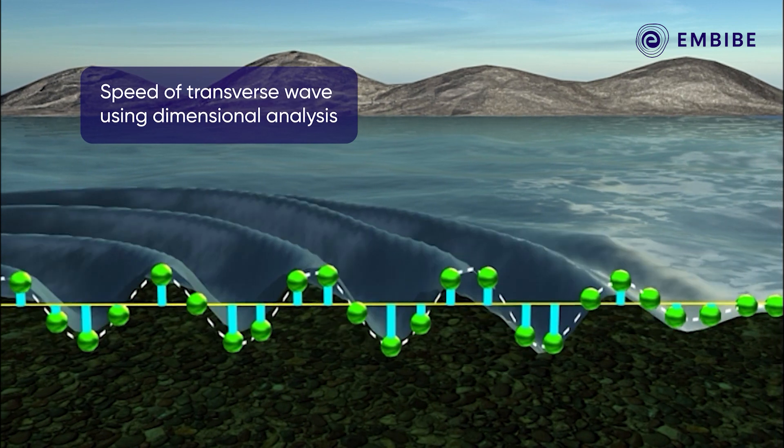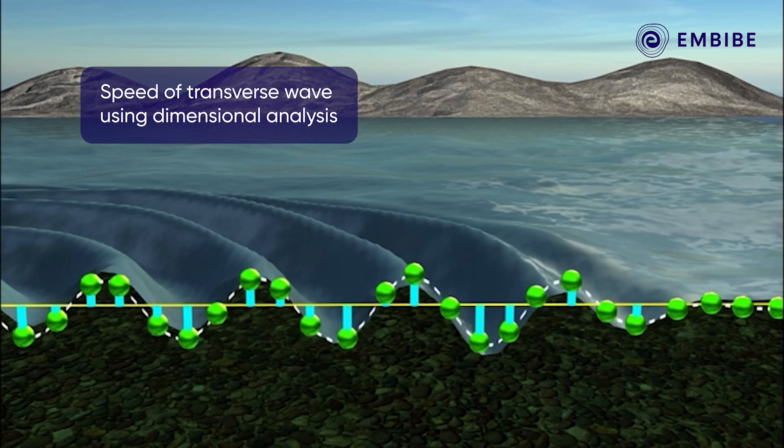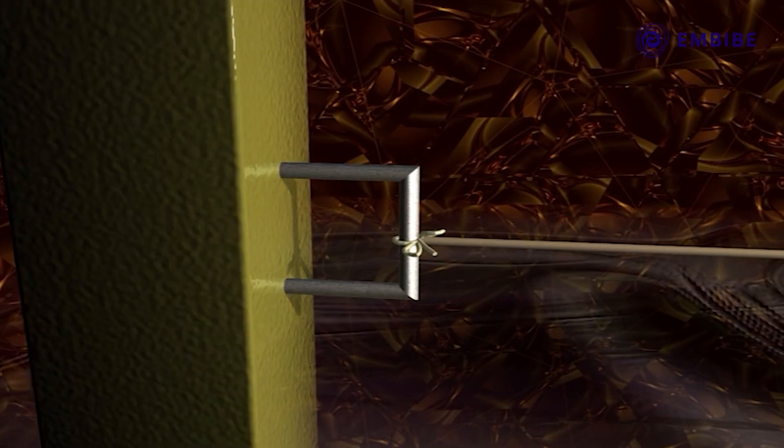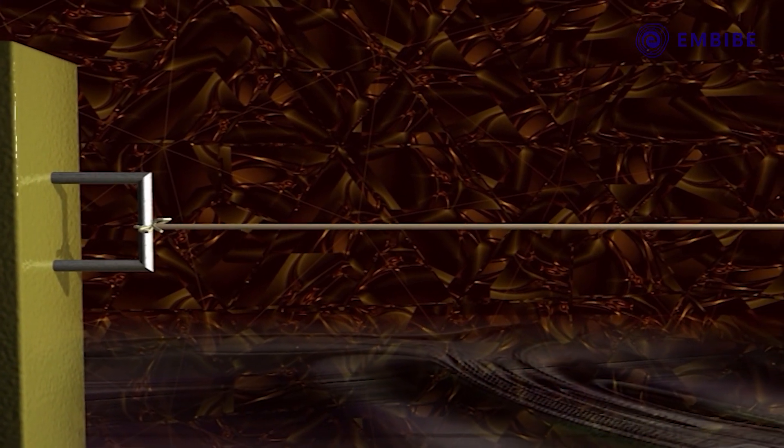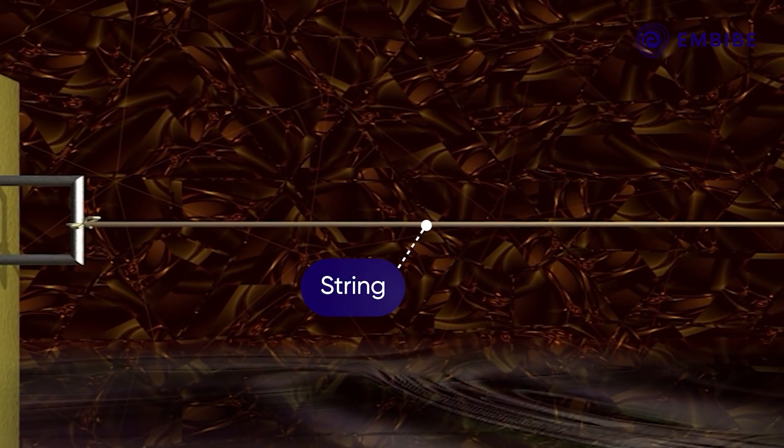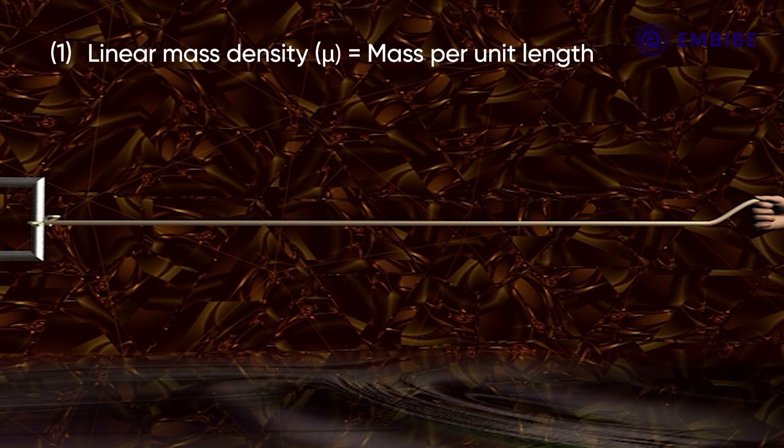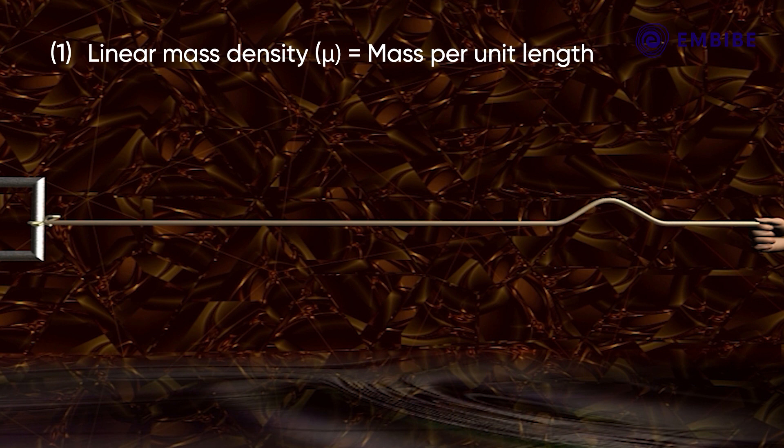Here we will obtain the speed of transverse waves using the dimensional analysis. In fact, it has been found that the speed of transverse waves in a medium like a string kept under tension depends on: one, linear mass density (that is mass per unit length μ) of the string, and two, tension T in the string.